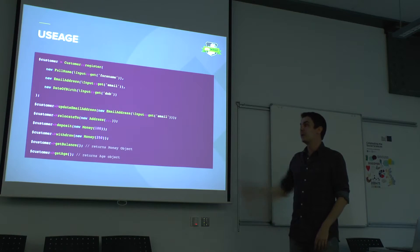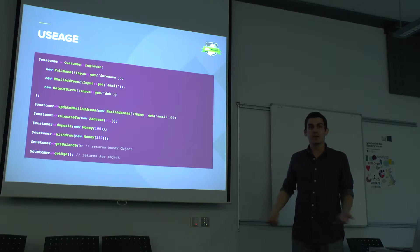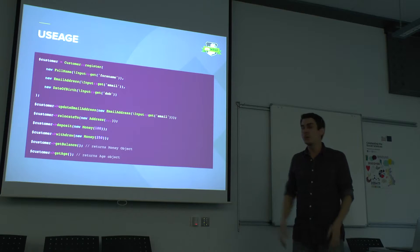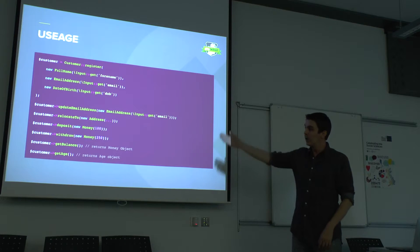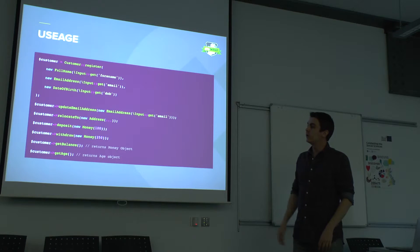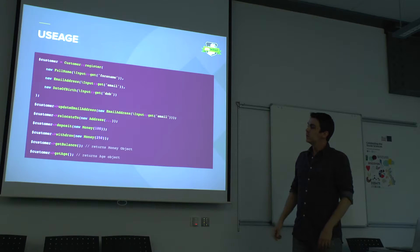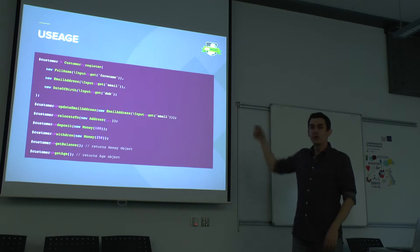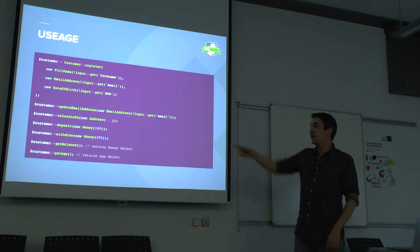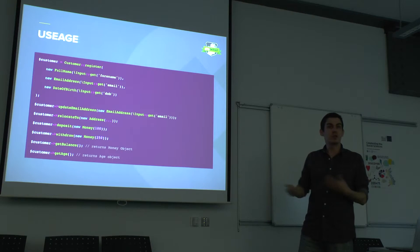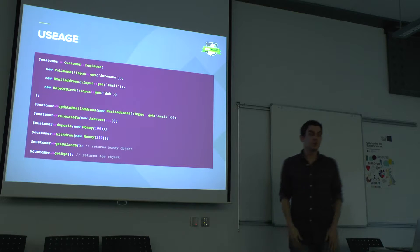In the case of banking, you might want to deposit some money, so you create a money object to make sure it's a numeric value and has a certain range — whatever your business rules are. Similarly you can do a withdrawal. When you get these objects back, like get balance, that would return a money object. Or get age might return an age object, which you can then do something with.